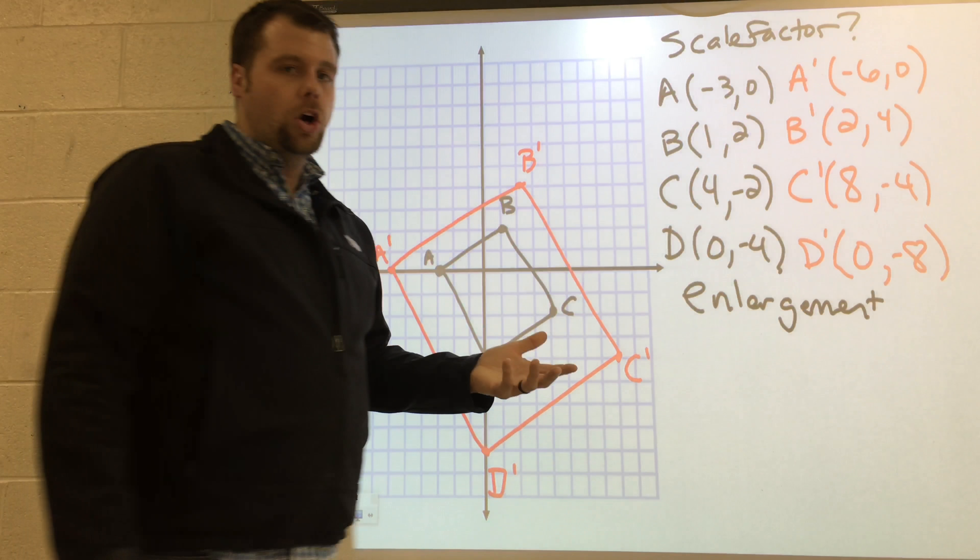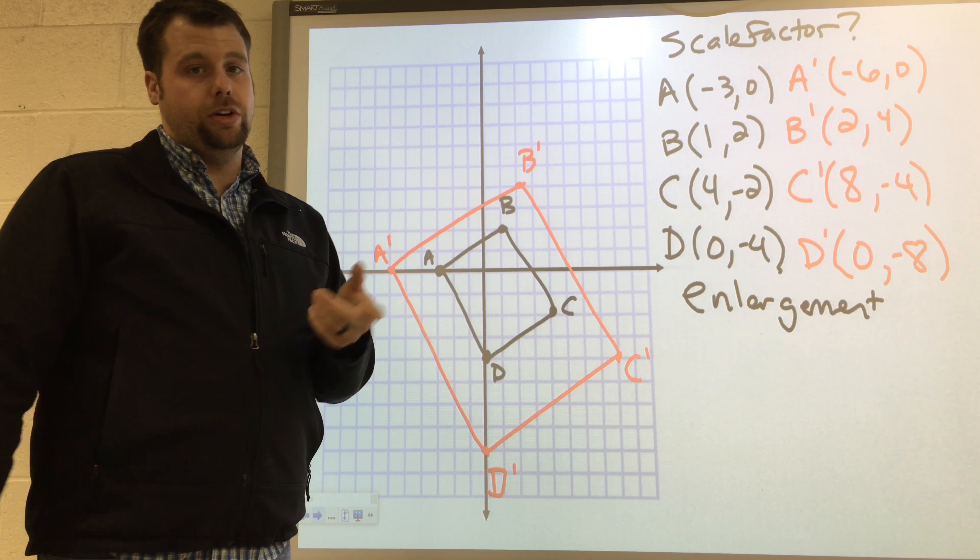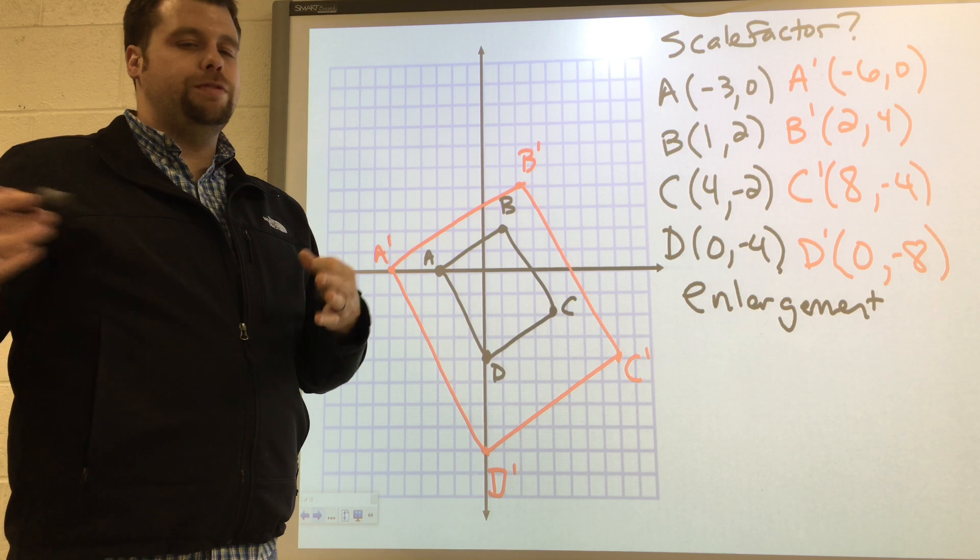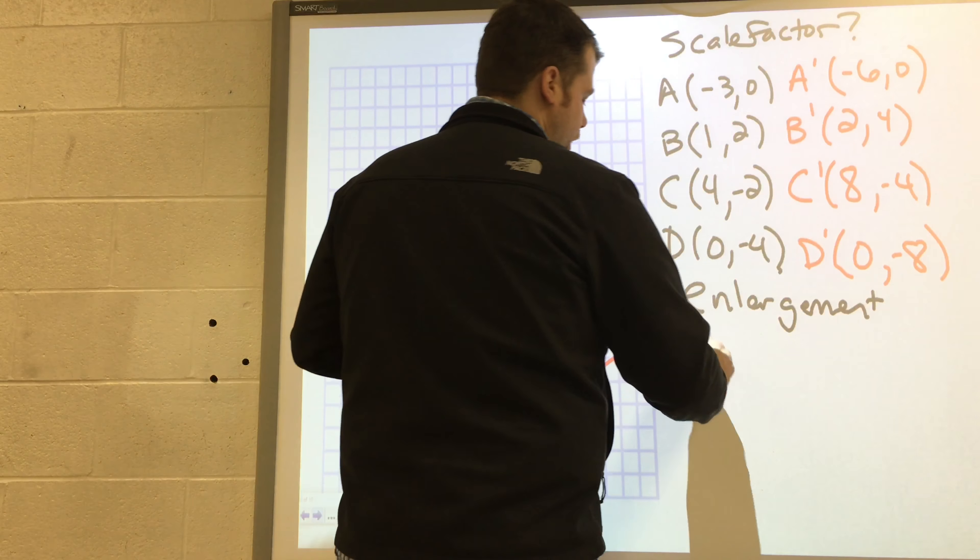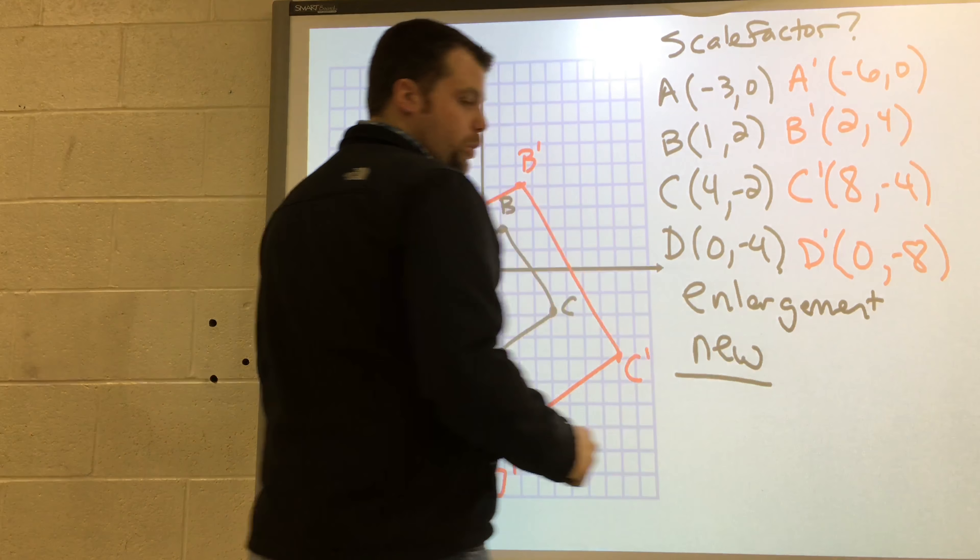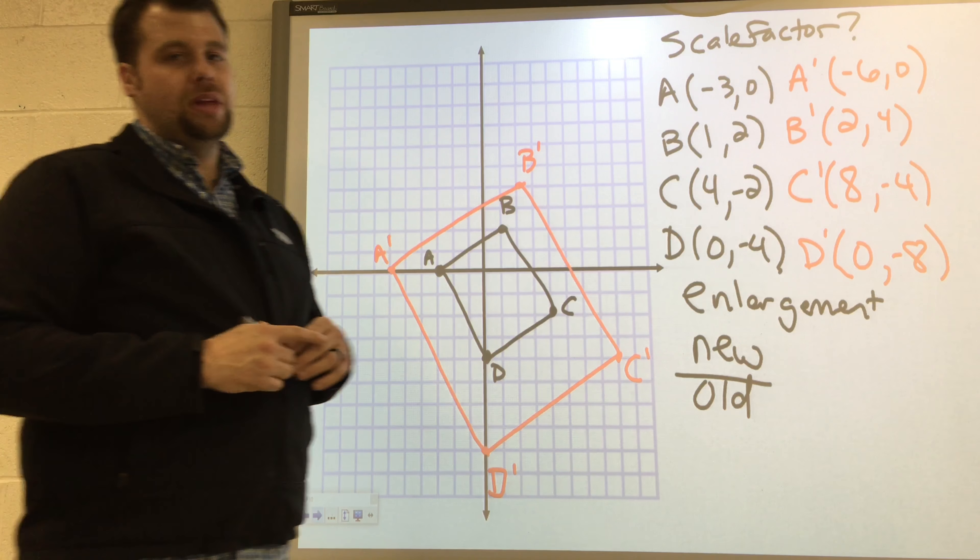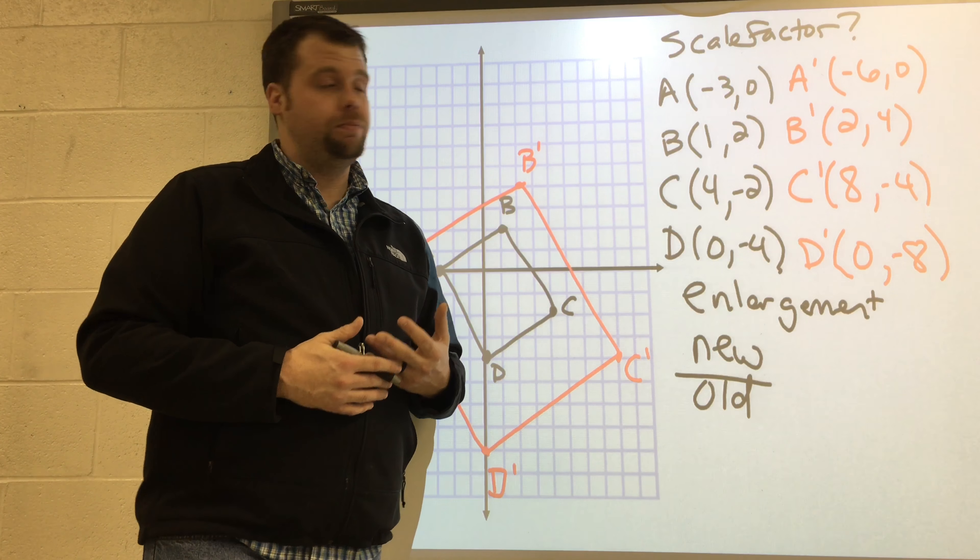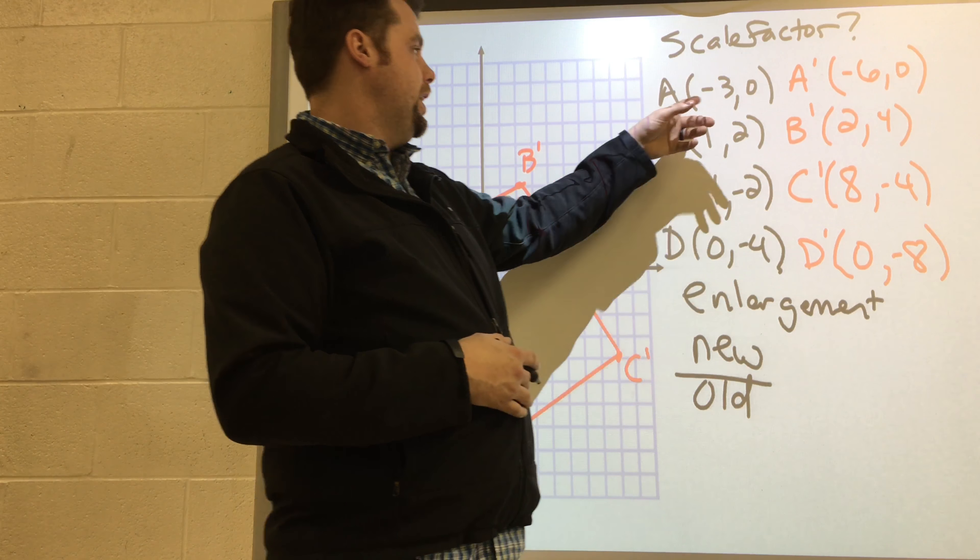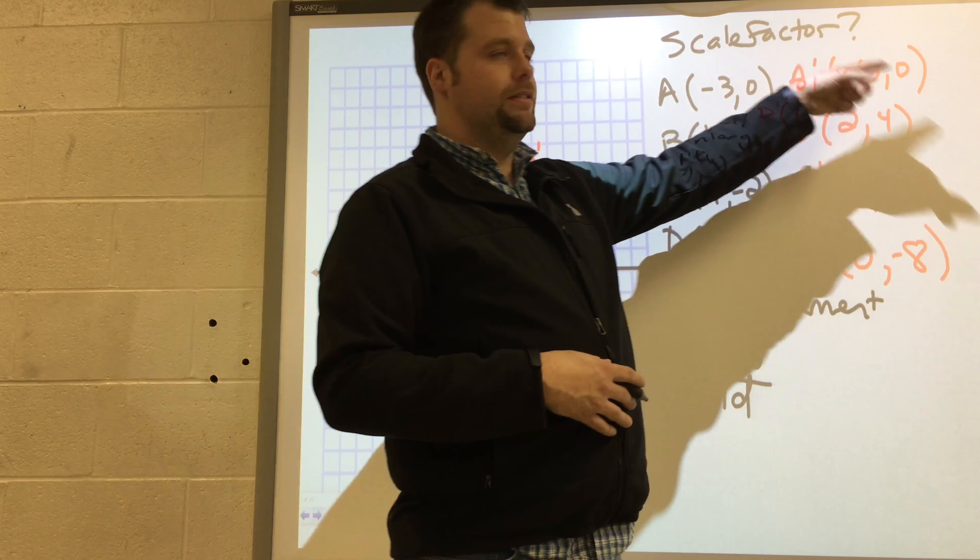So, since it's an enlargement, I should come up with a scale factor greater than one. If I want to find the scale factor, I need to take some value from the new and divide it by some value from the old. And you could just do that with any point, really. So, if I just take this point, negative 3, 0, negative 6, 0.